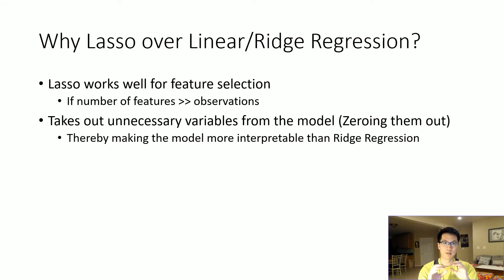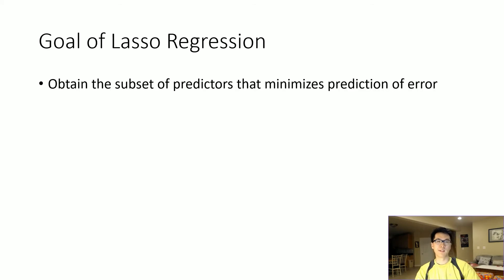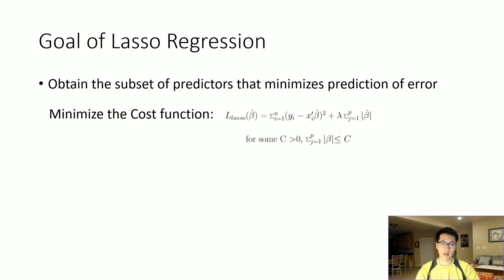Lasso just puts zero as a coefficient for its features, taking them out. So what's the overall goal of using lasso regression? One of the main differences between lasso and ridge is that the minimization of the cost function is slightly different.